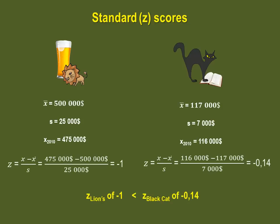Because minus 0.14 is actually larger than minus 1, we can state that even though both businesses had lower than average years, the Black Cat had a better year than the Lions. We will be seeing a lot more of the z-score in following videos.